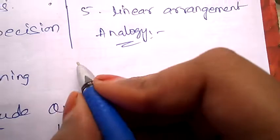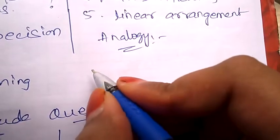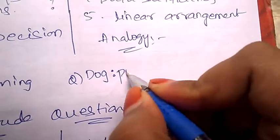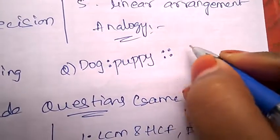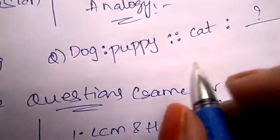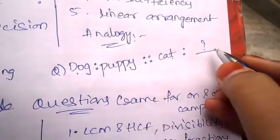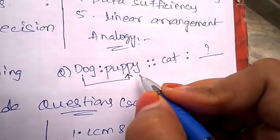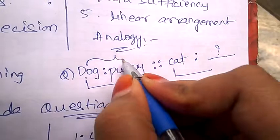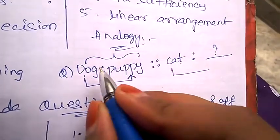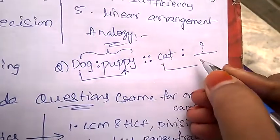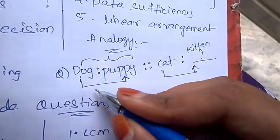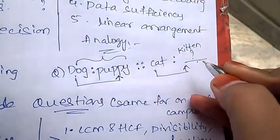Under analogy example: dog is to puppy as cat is to question mark. Dog's baby is called puppy, so the relationship between these two words is mother and child, like dog and puppy. So cat's children are called kitten. Like this, you need to find the relationship between these two and guess the answer which comes in the place of the question mark. This is called analogy.